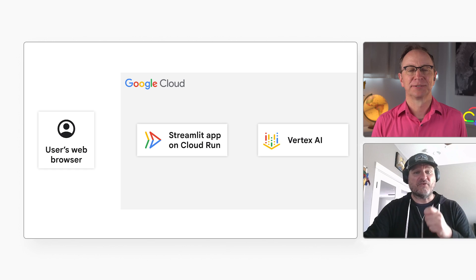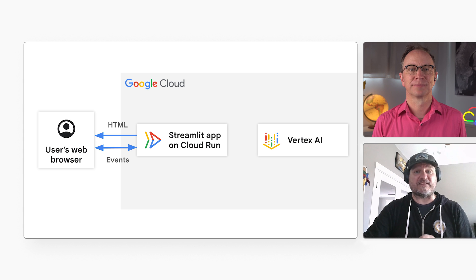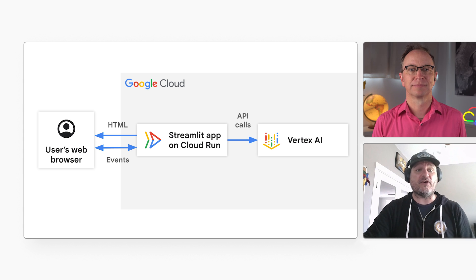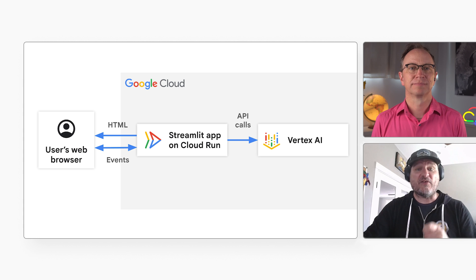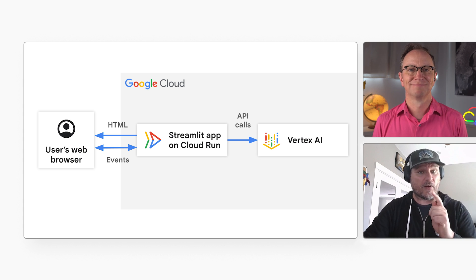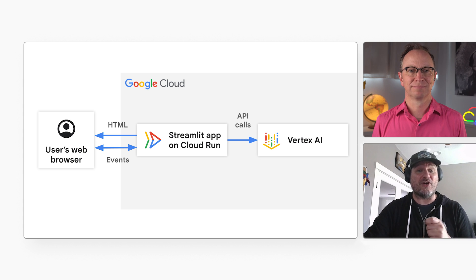Jerome, what tools did you use to build this sample application? I used Python, the Streamlit User Interface Library, the Vertex AI API, and the Imagen API. The code is really short — 600 to 700 lines of code, including the UI. It is short because the difficult work is done by Google on the server in the AI.